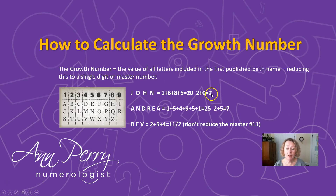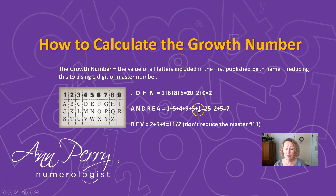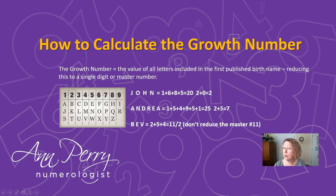Let's do another example — Andrea: A vibrates at one, N at five, D at four, R at nine, E at five, A at one. Add them together and you get twenty-five; two plus five equals seven. Now if somebody's first birth name comes up as eleven or twenty-two, we leave that alone because it's a master number and we have to acknowledge the intensity of the lessons relating to that master number.